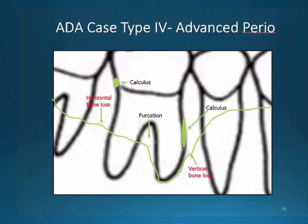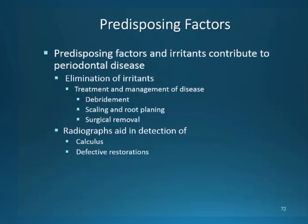Here is a previous radiograph with an illustration of the periodontal condition. Notice that I have identified the calculus in green, bone loss, and the drawing of the natural line of bone. Predisposing factors can encourage periodontal disease. We use radiographs to detect them when we cannot see them through visual exams. They are removed by debridement, scaling, and root planing or through surgery. Let's move on and take a closer look at calculus and how we can detect bone loss in the upcoming radiographs.